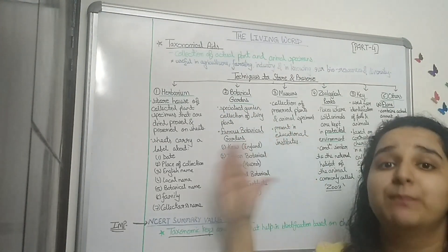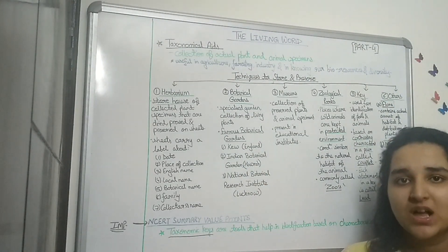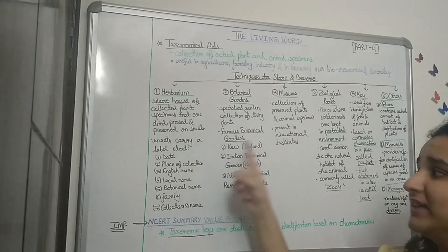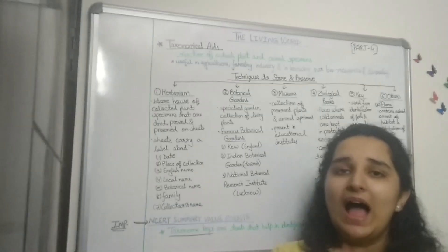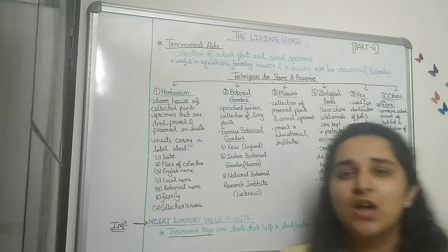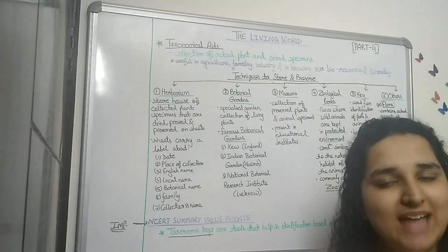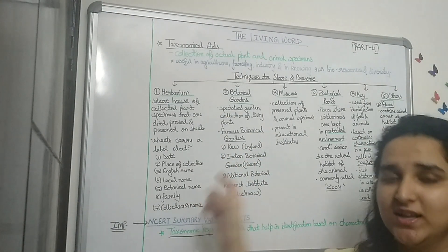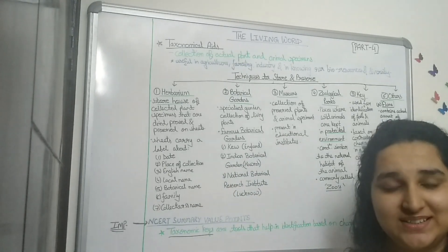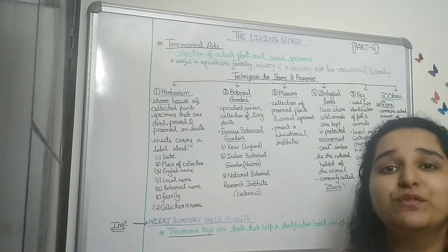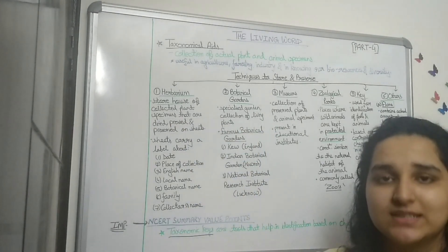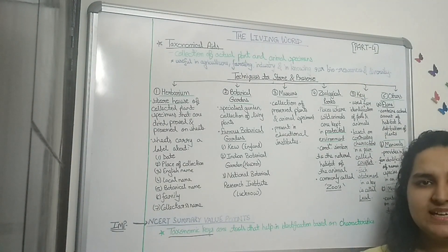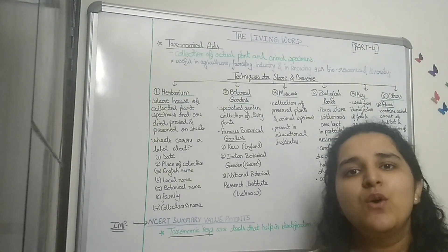Beginning with herbarium: a herbarium is a storehouse of collected plant specimens that are dried, preserved, and pressed on sheets. You can link and remember this because 'herb' is a category of plants, so herbarium is a storehouse of plants.